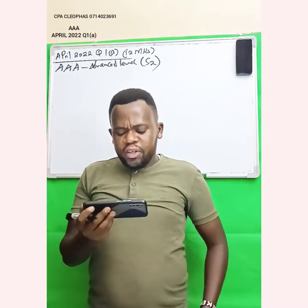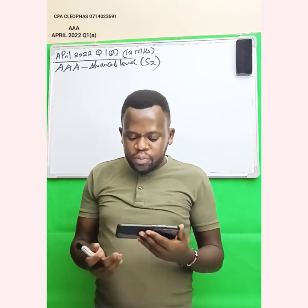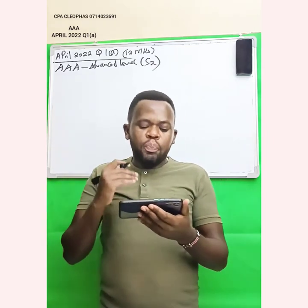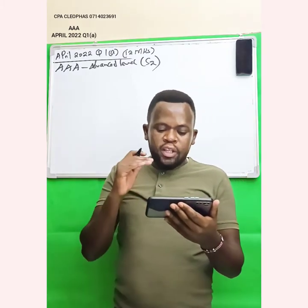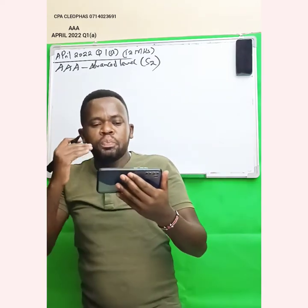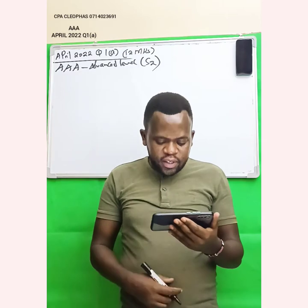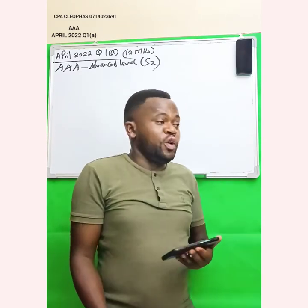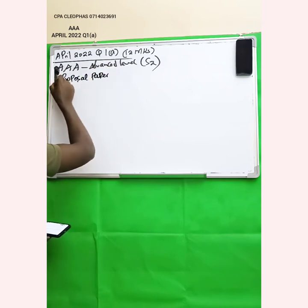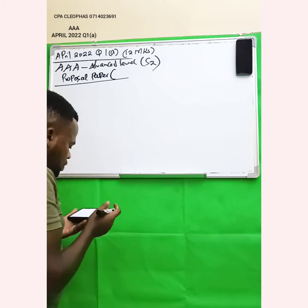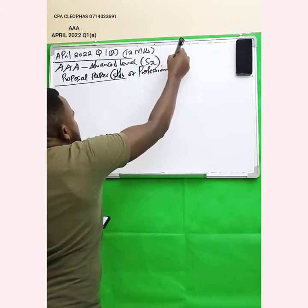Required: With reference to International Standards on Auditing (ISA) and any other acceptable standards of global practice, prepare a proposal paper on the required standards of professional practice.